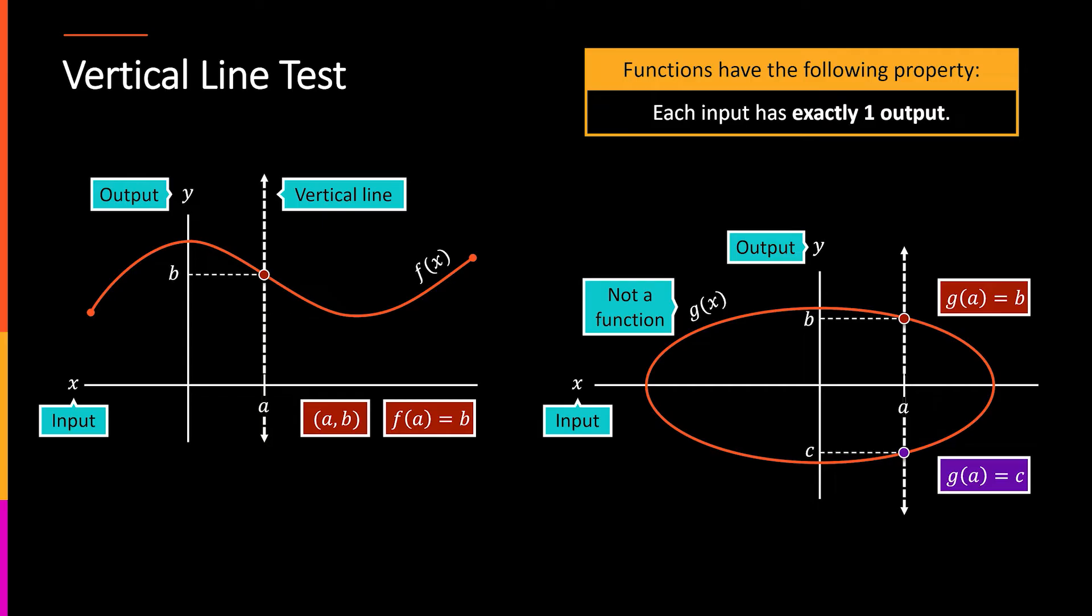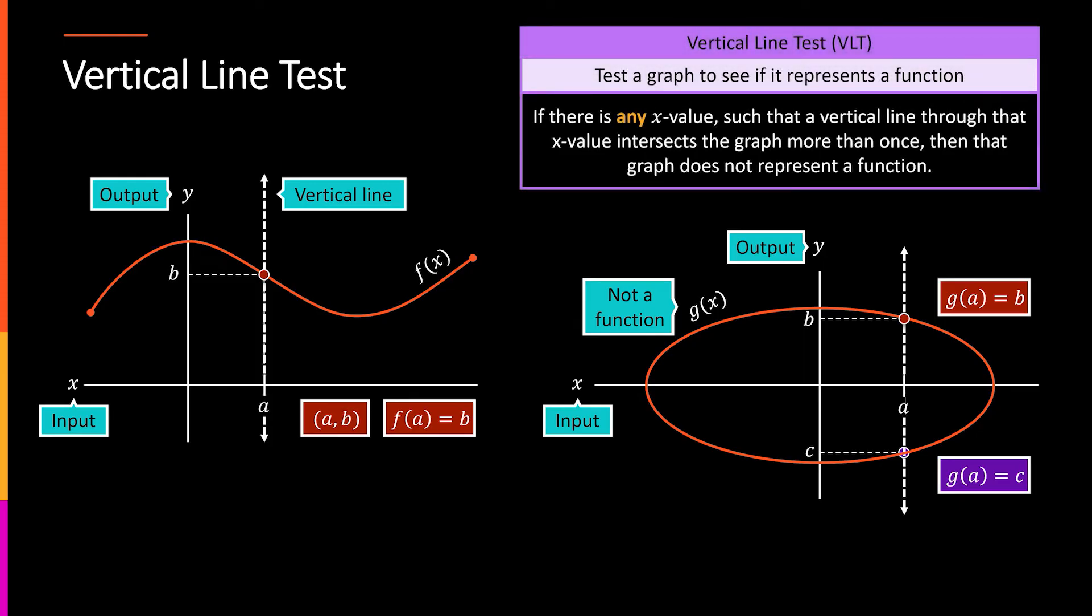So this gives rise to the vertical line test. The vertical line test says that if there's any x value such that when you make this vertical line through that value, the line intersects the graph more than once, then the graph doesn't represent a function. So because we hit the curve in more than one place along this line, this one is not a function. Whereas over here, we only hit the curve at one spot no matter where we go, and that's why this one would represent a function.